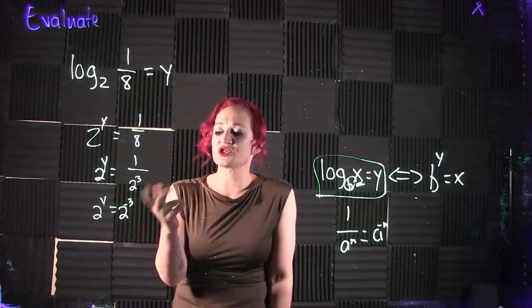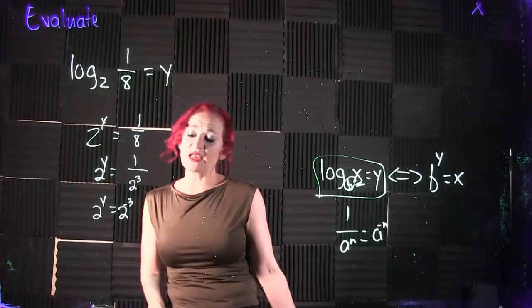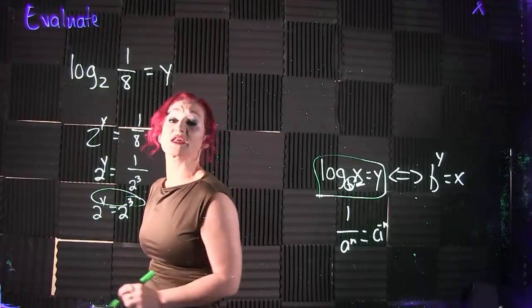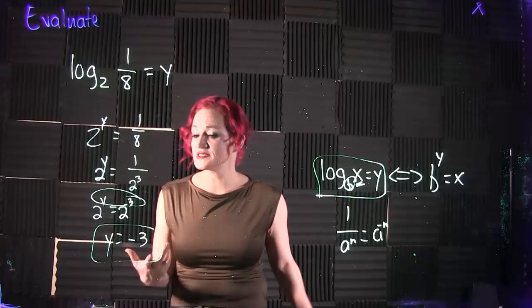So using that has changed it to 2 to the negative third power. And we have a same base rule for exponents that says if your bases are the same, you can set your exponents equal to each other. That tells us y is equal to negative 3.